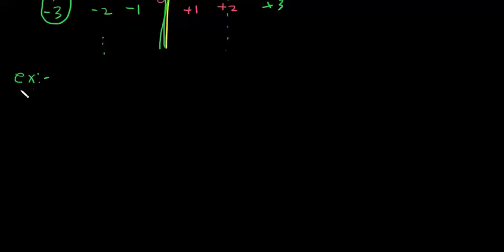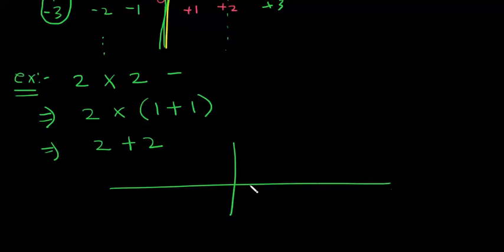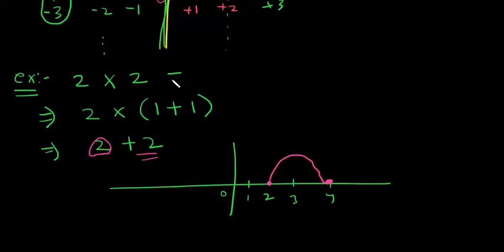So let's take some examples for multiplication. For example, 2 into 2. I can write it as 2 into (1 plus 1), which becomes 2 plus 2. We saw on the number line that you start at position 2, and if you add plus 2 you move to 4. So 2 plus 2 is 4. You can convert this multiplication into addition.